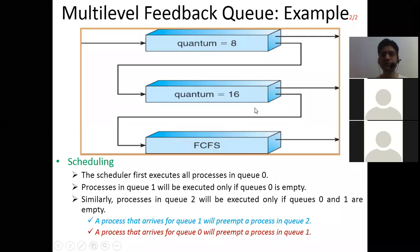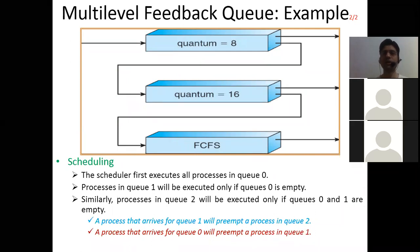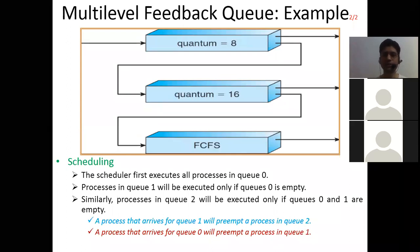In this manner, we try to put a flexible system to give a fair chance to all processes to execute properly and have a fair share of the CPU. So this is the concept of multi-level queue and multi-level feedback queue. Let me revise today's class once again.